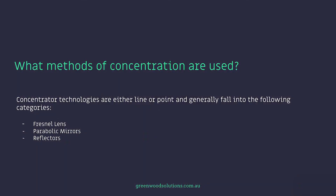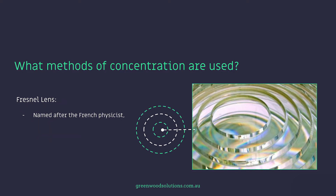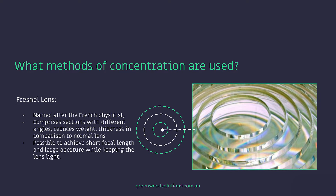Concentrator technologies are either line or point and generally fall into the following categories: Fresnel lens, a parabolic mirror, and reflectors. The Fresnel lens is named after the French physicist Fresnel and it comprises sections with different angles, reducing weight and thickness in comparison to a normal lens. It is possible to achieve short focal lengths and large aperture while keeping the lens quite light.